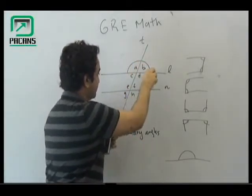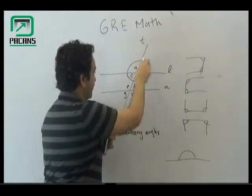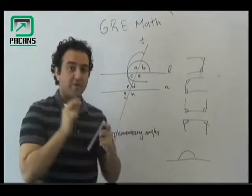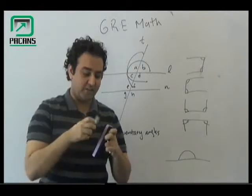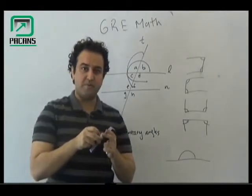So this is supplementary, this is supplementary, this is supplementary. So when two angles are going to be added and they give you a sum of 180, they are going to be supplementary.